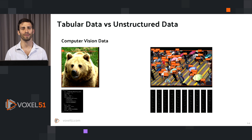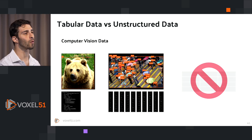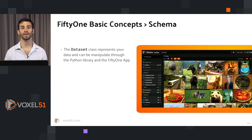And this is not even thinking about videos or point clouds or other types of datasets. Imagine dealing with relationships, key points, or a variety of label types, each with different fields and attributes. Data tables are probably not the tool for the job. But what can we use? Enter 51. FiftyOne is built from the ground up to efficiently store, represent, and manipulate the unstructured data in computer vision applications.